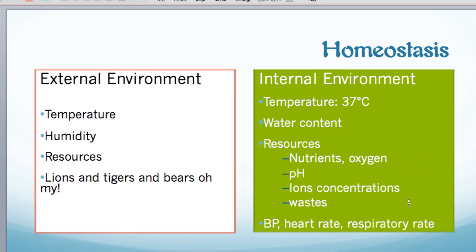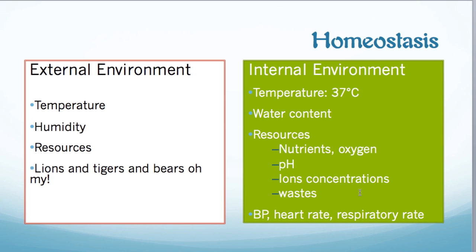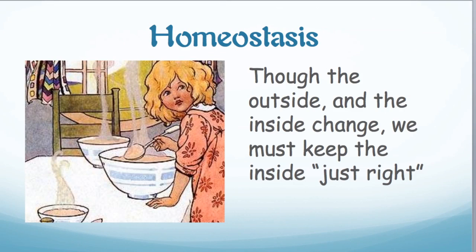Homeostasis can also manage things like blood pressure, heart rate, respiratory rate, and digestive rate. Think about blood pressure or digestion — we do want them to be higher or more active sometimes, lower at other times, but we have to have them in just the right place. Like Goldilocks, we're looking for that situation where everything is just right — what I might call the sweet spot — no matter what changes in the outside environment and no matter what changes on the inside.